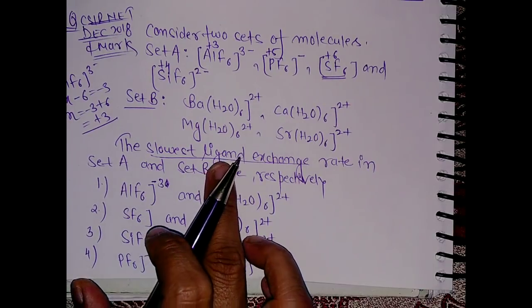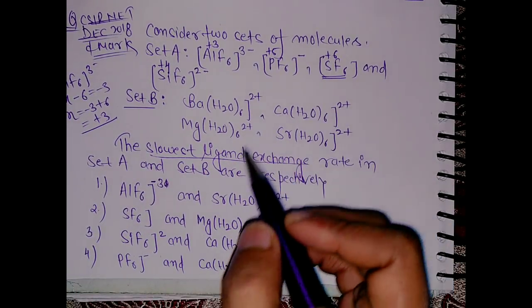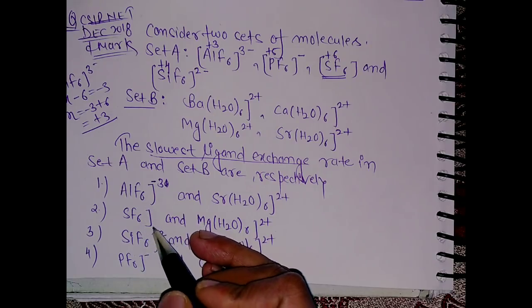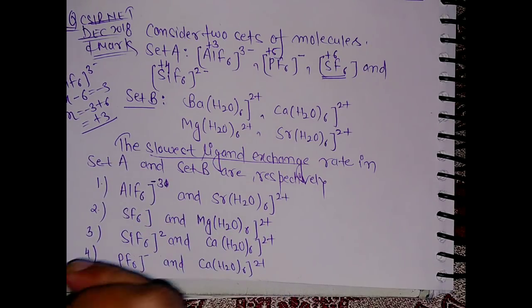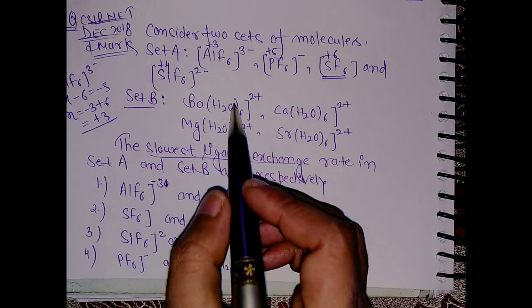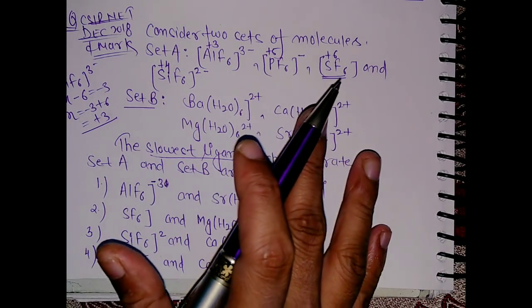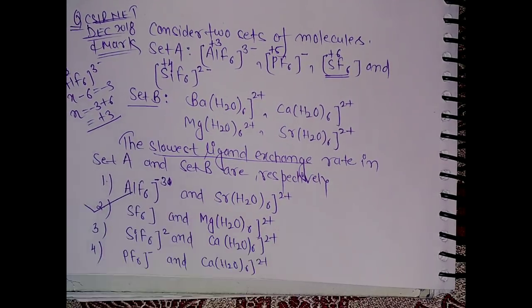In this compound there will be the slowest ligand exchange rate. So you can check in the option, SF6. Here this is the only option where we have SF6, so even though you don't know for Set B, then also you can calculate. So second is the correct answer.